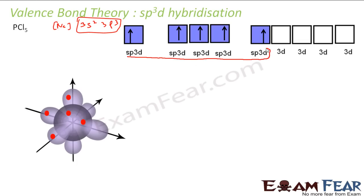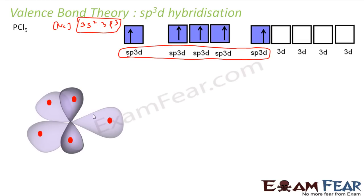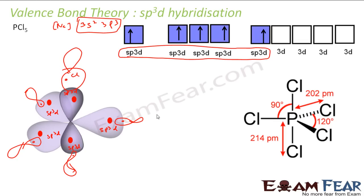Please note that SP3D hybridization involves five orbitals. They form five SP3D hybrid orbitals, all similar in shape, each containing one electron. Each chlorine atom has one unpaired electron, and since each SP3D hybrid orbital also has one unpaired electron, they pair and form a bond. This gives us PCl5, and the shape will be trigonal bipyramidal.